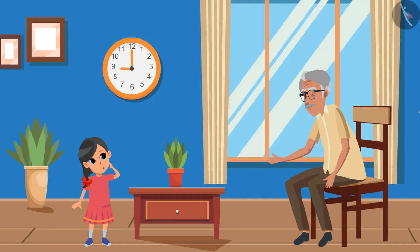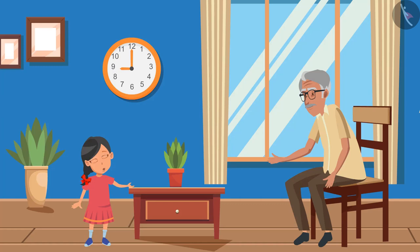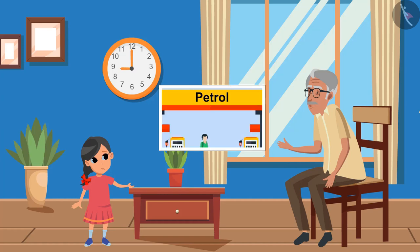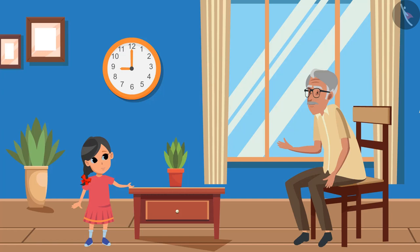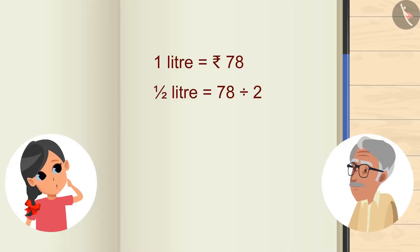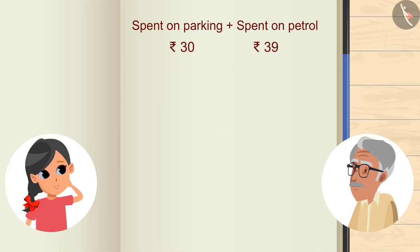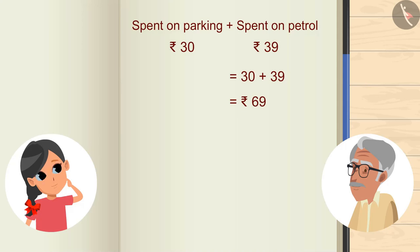So our total expenditure is 1500 rupees, right Grandpa? No, Guddhi, we have other expenses too. I have seen you give 30 rupees for parking. Where else have you spent? We drove a vehicle too, so petrol is also spent. About half a liter — and a liter of petrol costs 78 rupees, so half a liter will cost half of 78. If we divide 78 by 2, we get 39 rupees.